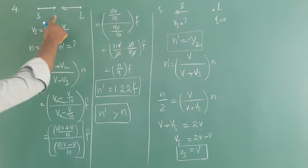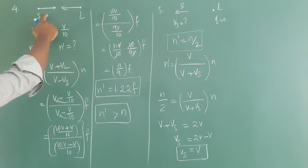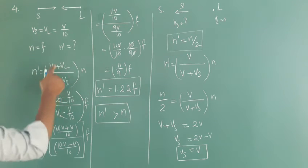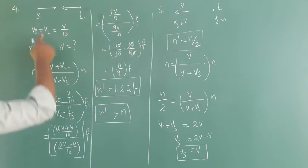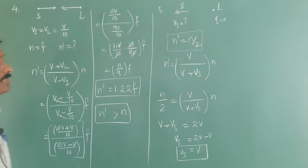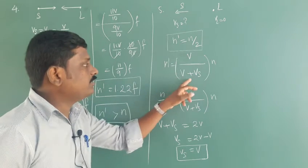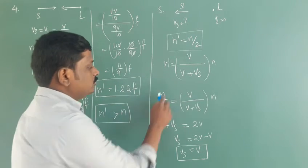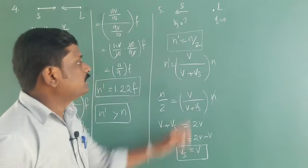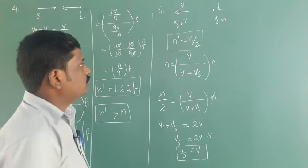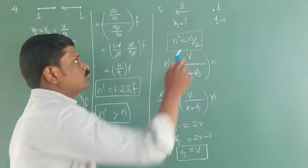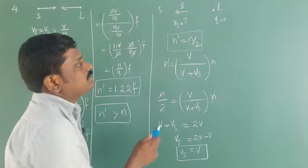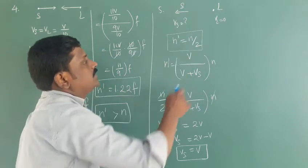Comparing with the previous case: here the listener is at rest, and the source moves away — not towards. So we set VL equal to 0, and the direction changes, so the minus in the denominator becomes plus. The formula becomes N dash equals V divided by V plus Vs, times N. Substituting N dash equal to N by 2 and cancelling N on both sides, we need to find Vs.